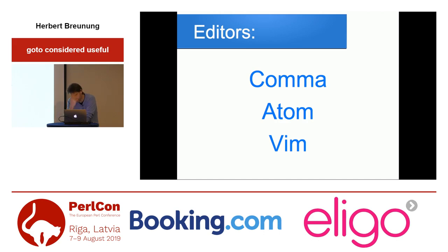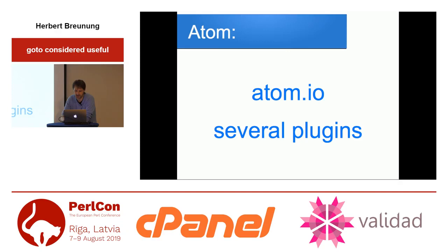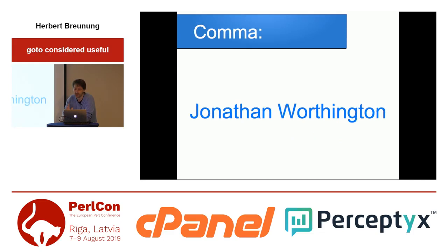Some words about the editor, because it is very worth it to use the right editor when writing Perl 6. You can use Vim, you can of course use Emacs. Atom is quite good - not all the functions of the plugins work, but UX-wise Atom is fantastic. It is even so fantastic it doesn't do very much like a full-blown IDE, but it does the necessary stuff. But the best thing still is to use Comma, by Jonathan Worthington.